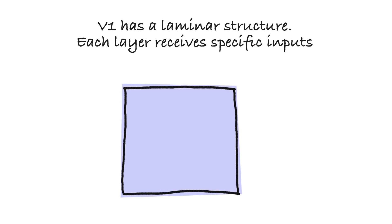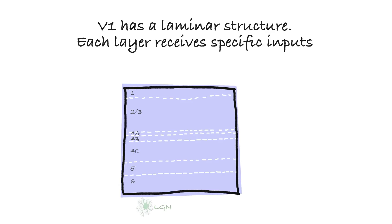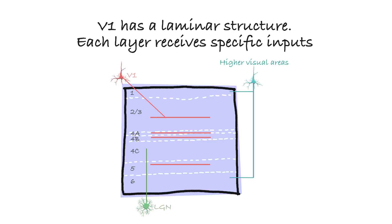It is known that V1, like all neocortex, has a laminar structure consisting of six stacked layers. Each layer receives specific inputs from other parts of the brain. Specifically, inputs from the LGN — the thalamic nucleus that receives inputs from the retina — terminate in layer 4C of V1. Within V1 itself, neurons in layers 2, 3, upper 4, and 5 have prominent long-range connections that travel within these layers for several millimeters. Finally, higher cortical areas such as area V2, V3, and middle temporal or MT send spatially extensive feedback connections to layers 1 and 6 of V1.